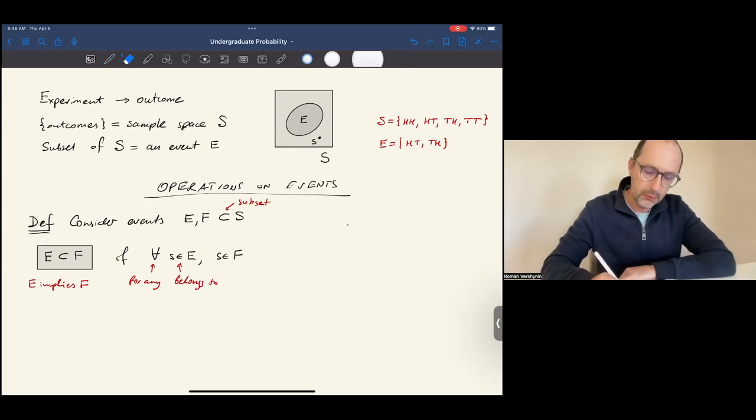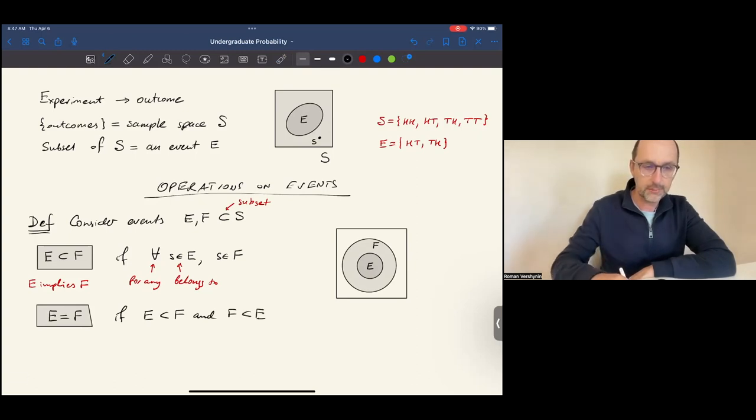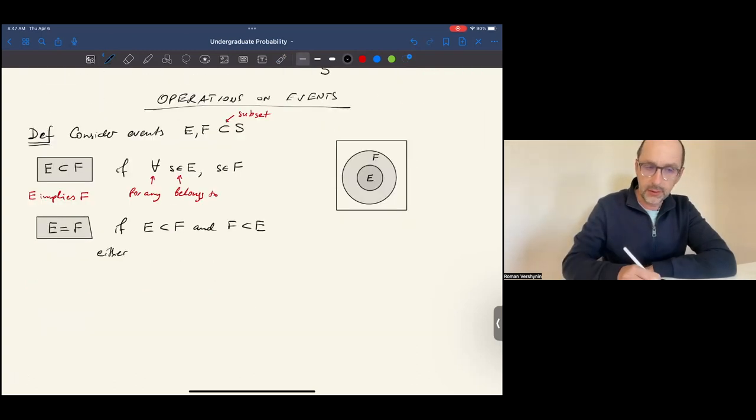The Venn diagram can illustrate that. Here is an event E, and here is an event F. E is included in F. We say that E and F are the same events, or E equals F, if E is included in F and F is included in E. They include each other. Either both events occur, or both don't occur.